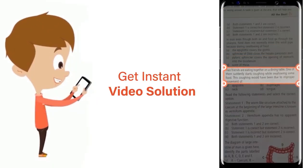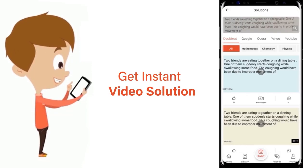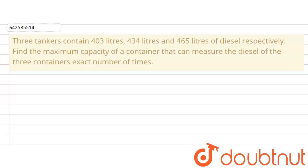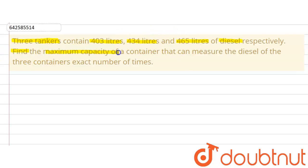The given question says that three tankers contain 403 liters, 434 liters, and 465 liters of diesel respectively. The question further says: find the maximum capacity of a container that can measure the diesel of the three containers an exact number of times.